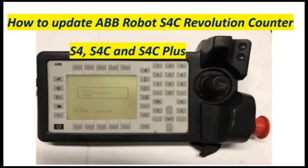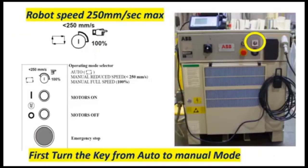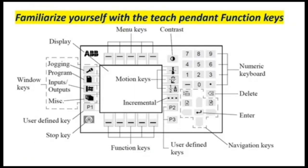Our topic for today is how to update the ABB robot S4C Revolution Counter. This is also applicable to S4, S4C, and S4C Plus. On manual mode, the robot speed is 250 mm per second maximum. I also have a video at the end of this presentation about the S4C Flex pendant.